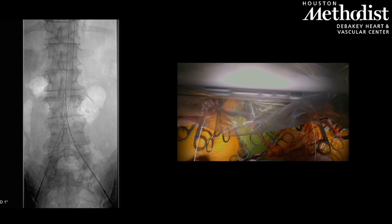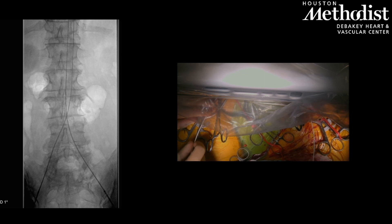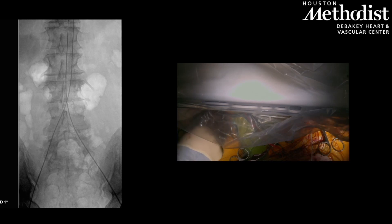We elected to treat the patient with a covered endovascular reconstruction of the aortic bifurcation, or CRAB, technique. We began with standard bilateral groin cutdowns, circumferentially controlling the common femoral artery and its bifurcation. The common femoral arteries were then accessed percutaneously, and six French sheaths were placed on either side. The wires from both sides traveled easily into the infrarenal aorta, and over-the-wire Fogarty balloons were then placed.